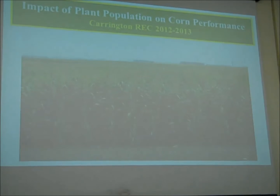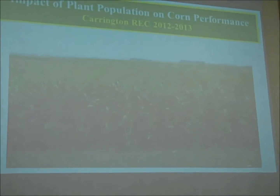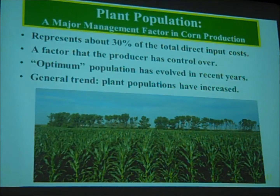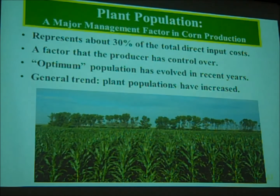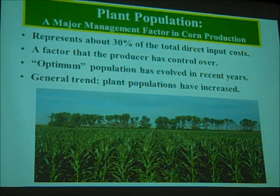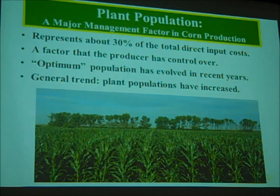Over time, as corn has become a more predominant crop in the region and as producers become more sophisticated in fine-tuning corn production practices, the issue of plant populations has arisen as a management factor to fine-tune. As that occurred, I found that we were lacking in up-to-date information. Optimum plant populations have been evolving, and we've seen a trend for plant populations to increase over the years, particularly from where we started in the 80s, and even as recently as five to eight years ago.